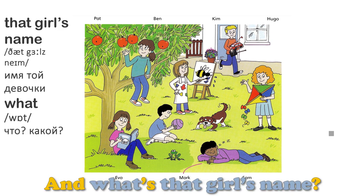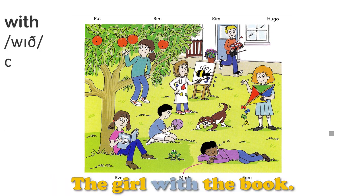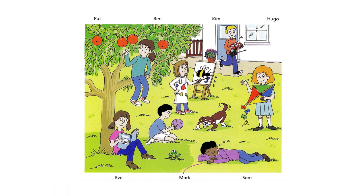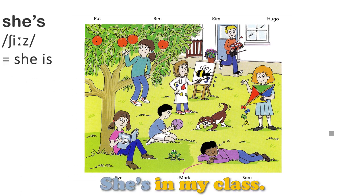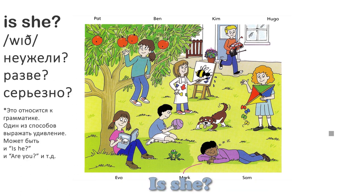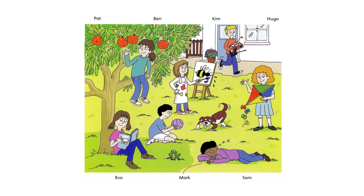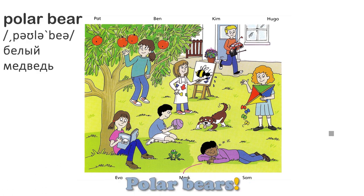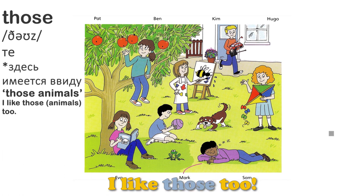And what's that girl's name? The girl with the book. That's Sam. She's in my class. Is she? What's Sam reading about? Polar bears. They're her favorite animals. I like those, too.